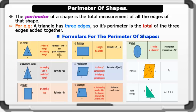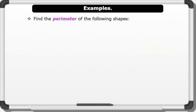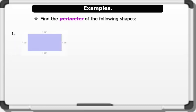That's brilliant. Now let us solve some problems. Find the perimeter of the following shapes. 1. The rectangle on the board.